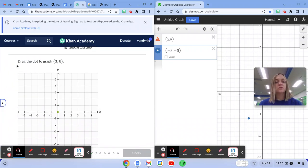Now it says drag the dot to the graph 3, 0. So I have to find 3 on the x-axis first. And then 0 means it doesn't go up or down, so it stays there.